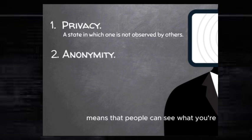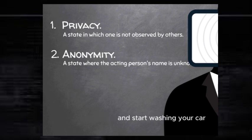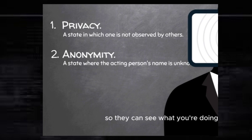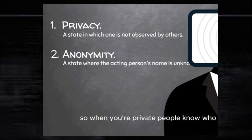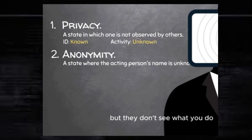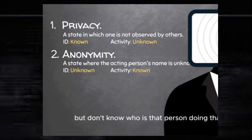Anonymity, on the other hand, means that people can see what you're doing, but they don't know who you are. For example, let's say while you're inside your house you put a mask on, and then you leave the house and start washing your car. People can see that there is somebody washing the car — they can see the activity — but they don't know who is that person doing that activity. So when you're private, people know who you are but don't see what you do. When you're anonymous, people see what you do but don't know your identity.